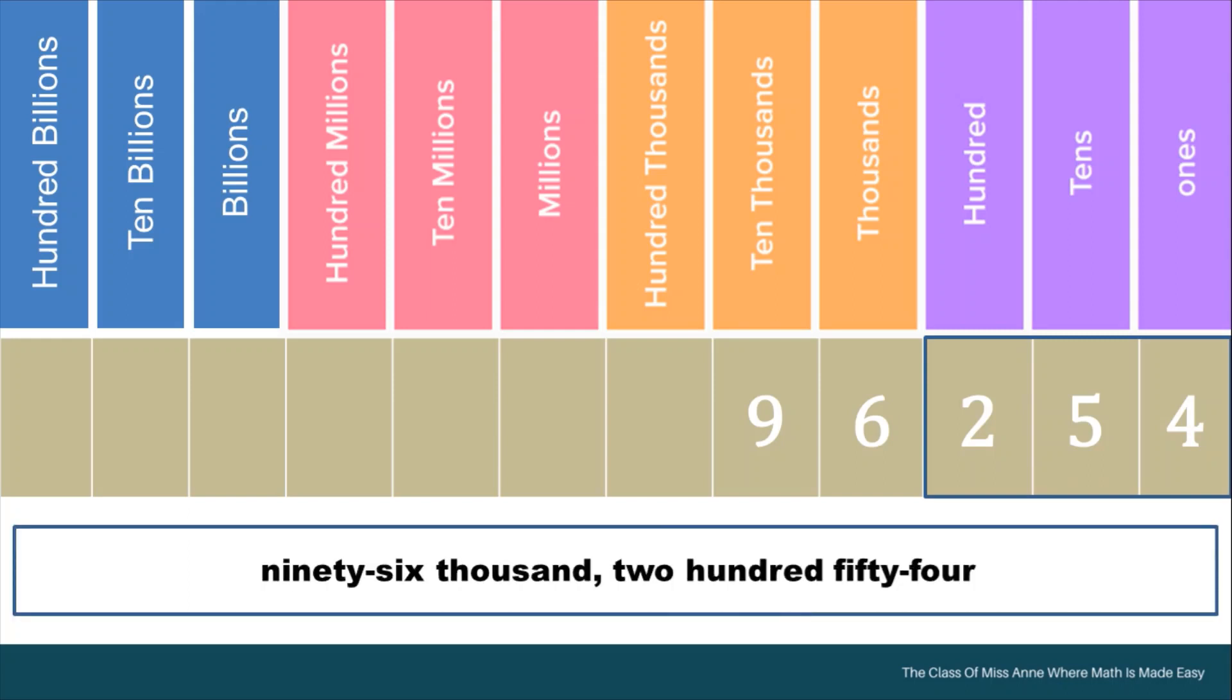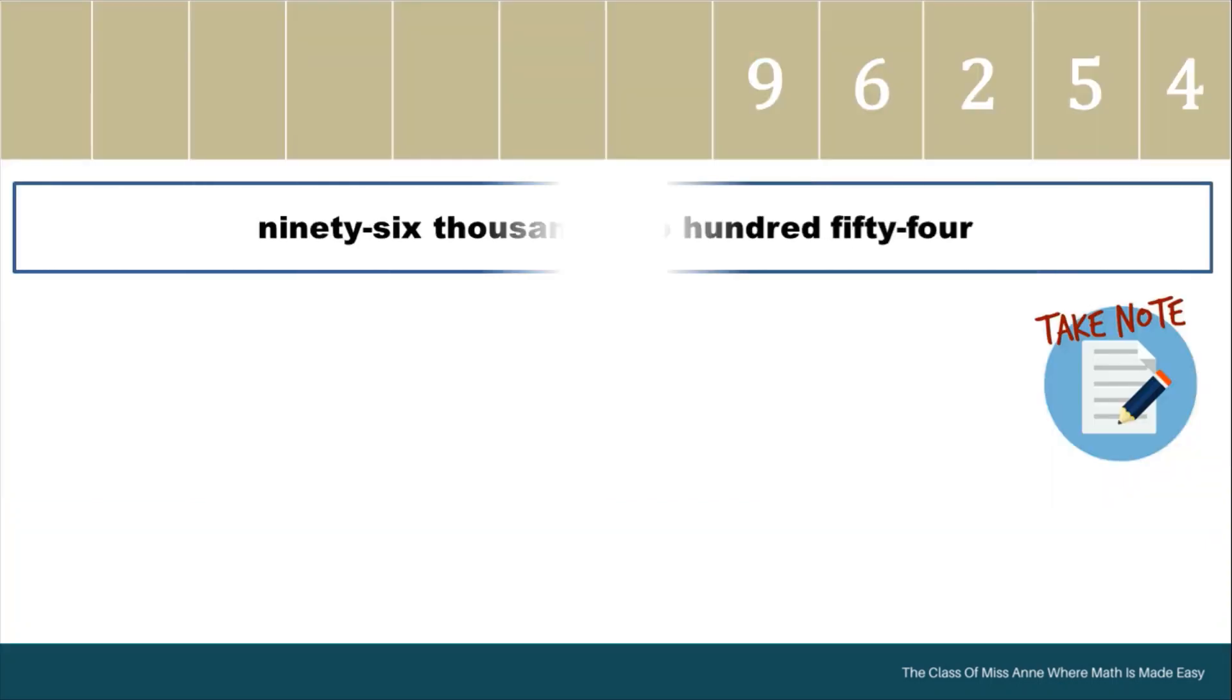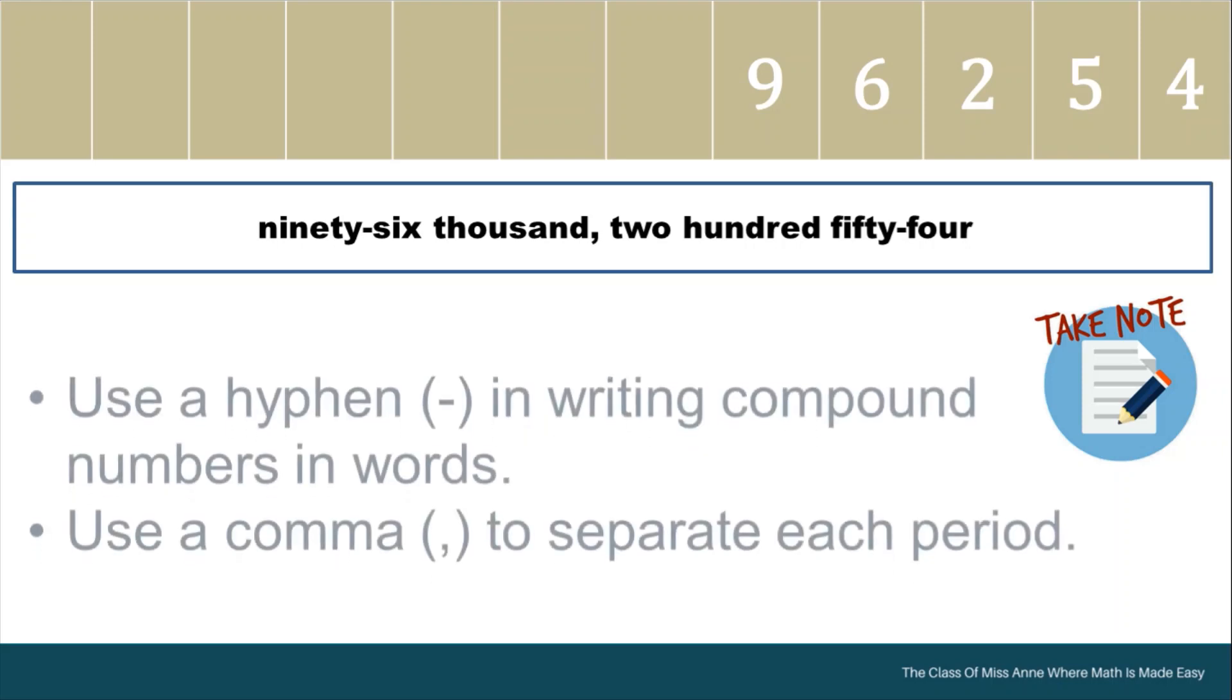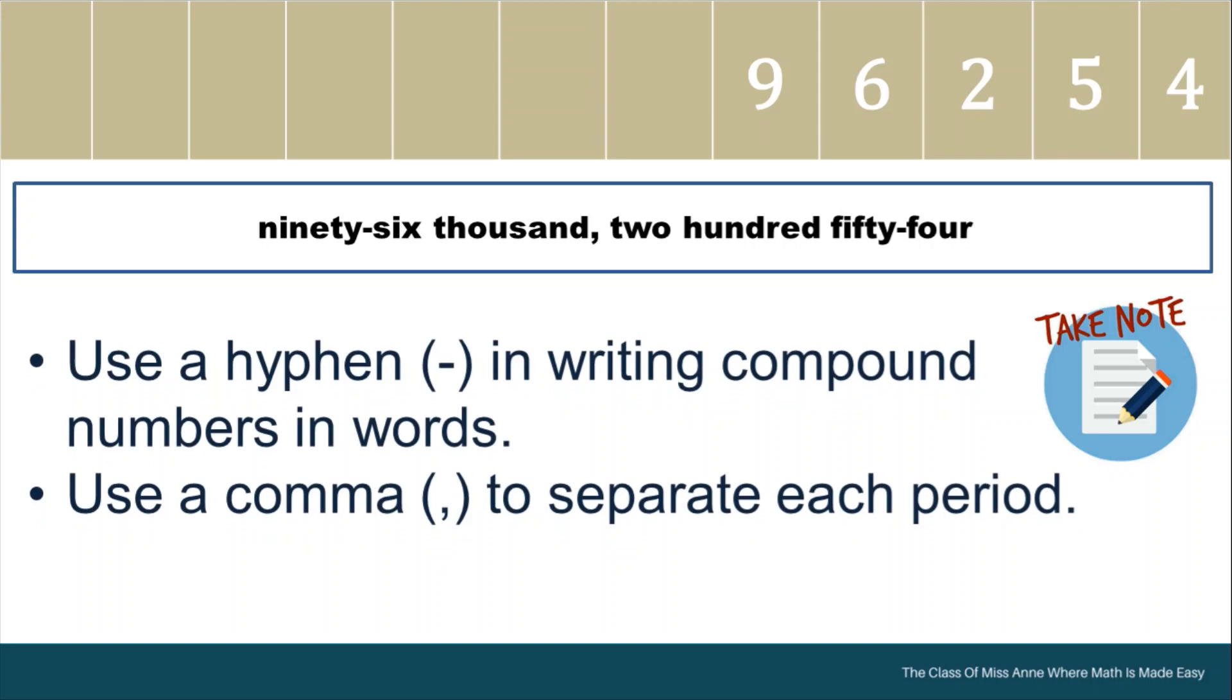Therefore, this number is read as 96,254. Take note of how we should write numbers in words correctly. Use a hyphen in writing compound numbers like 96 and 54. Use a comma to separate each period.